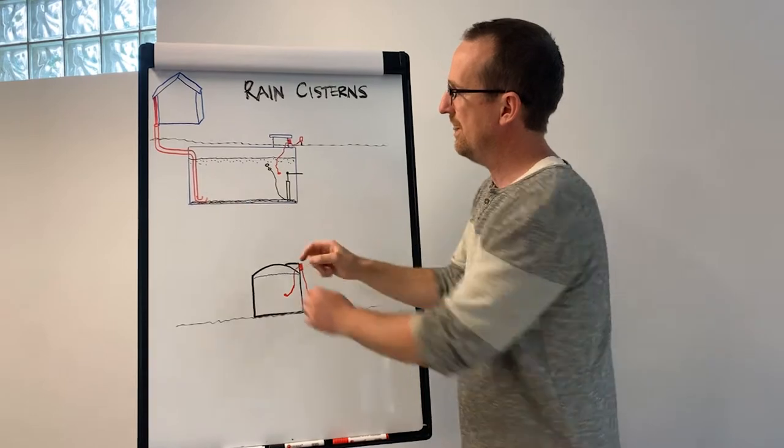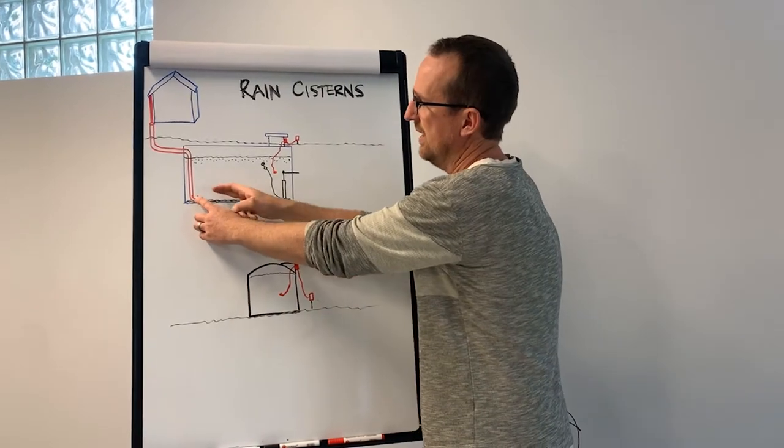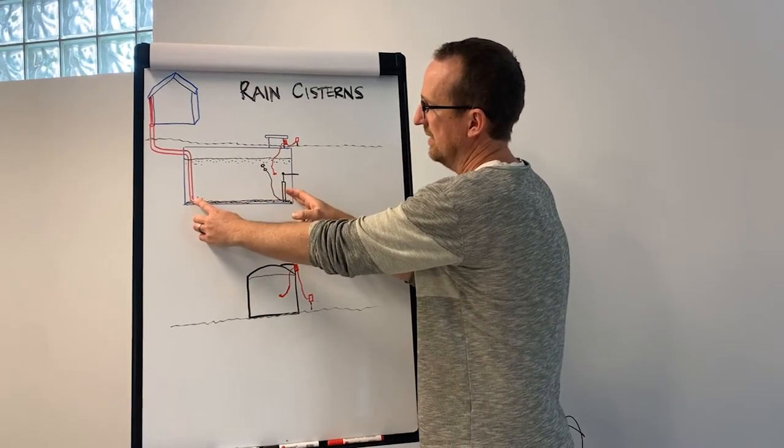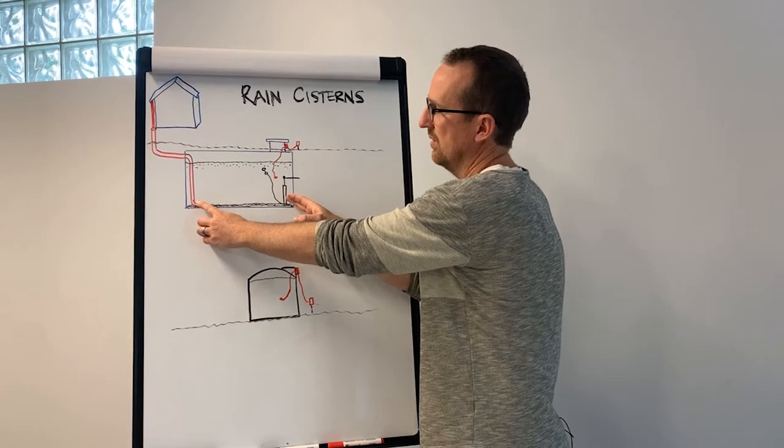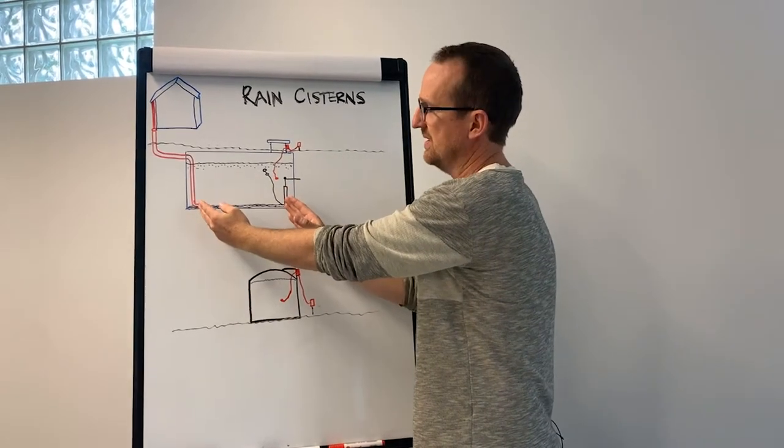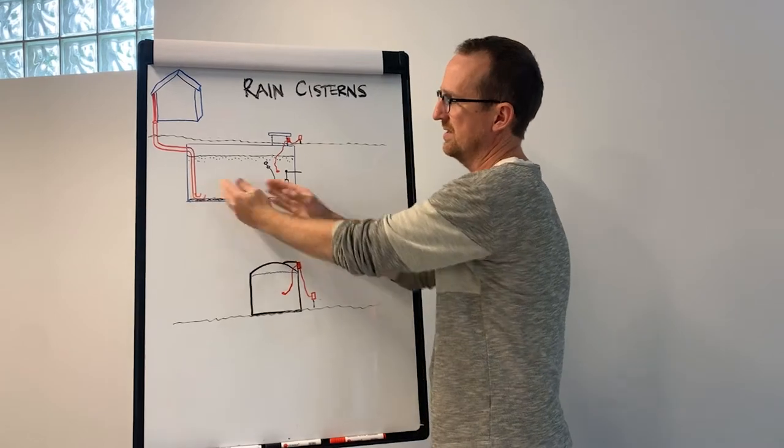The second thing you can do is have your inlet for the cistern as far away in the tank from your pump as possible. So ideally, opposite sides of the tank, your inlet and your pump exist.